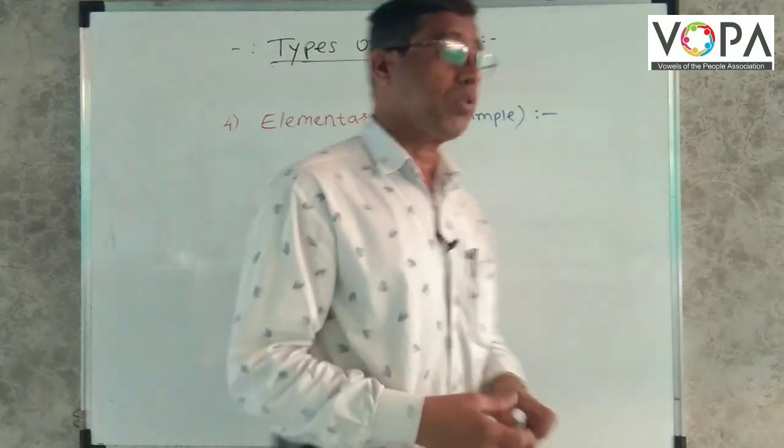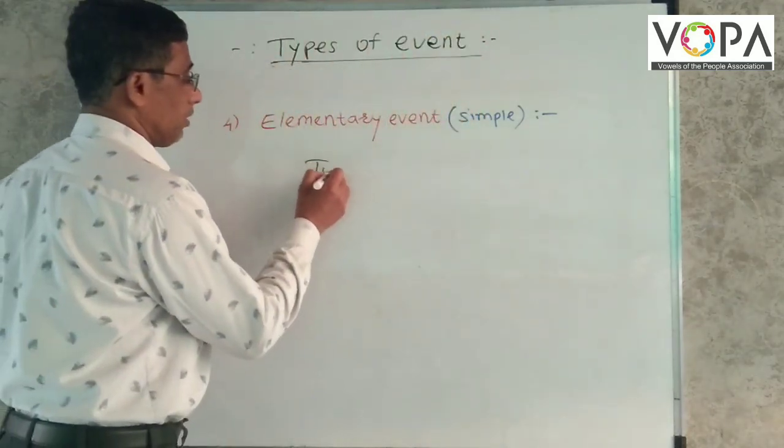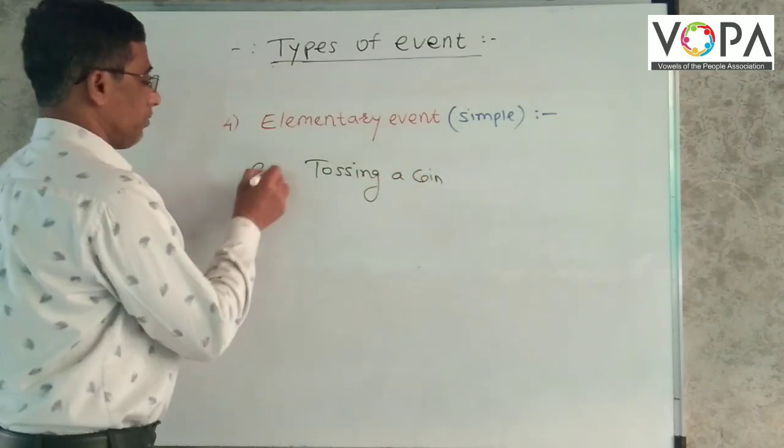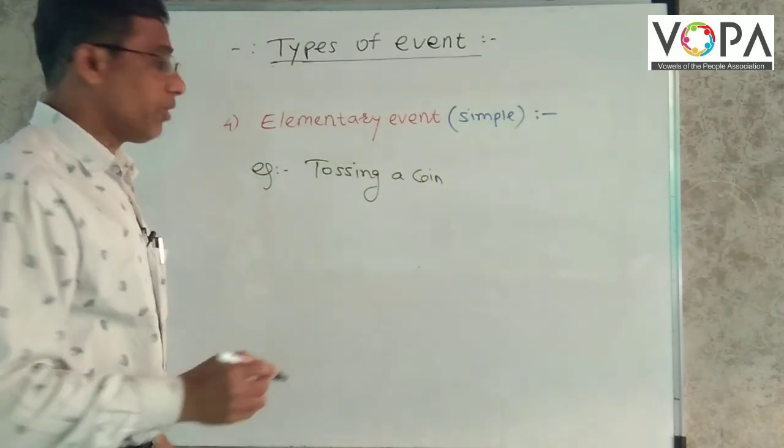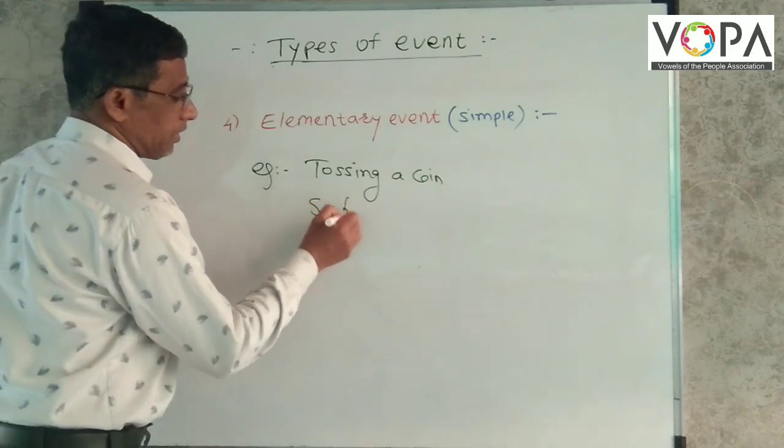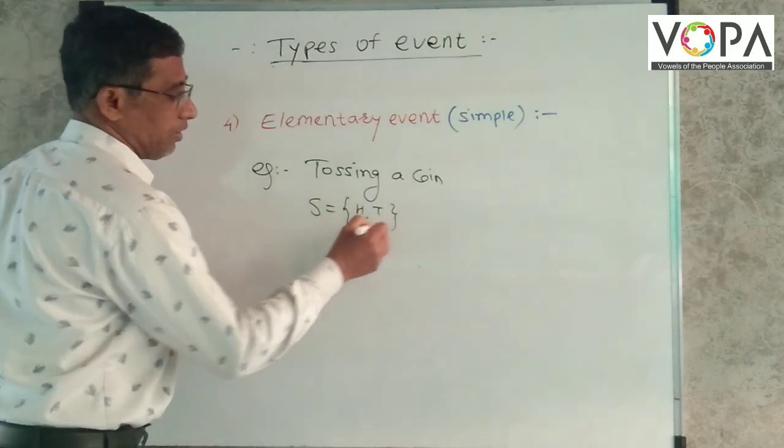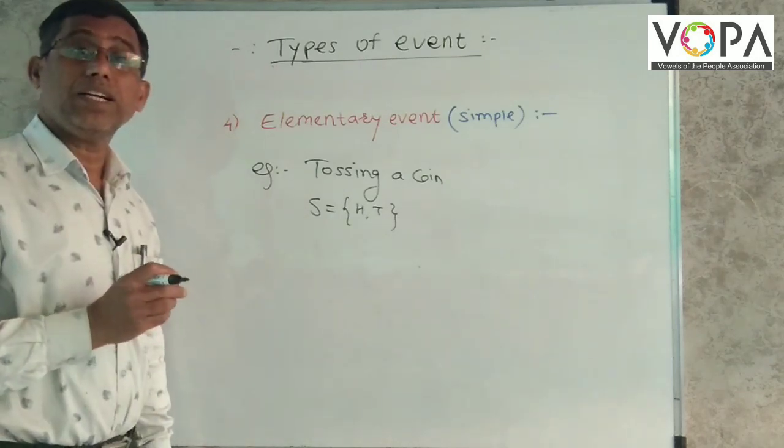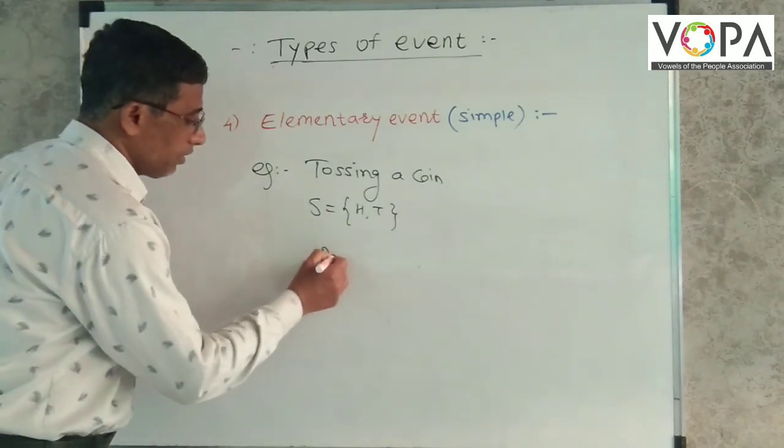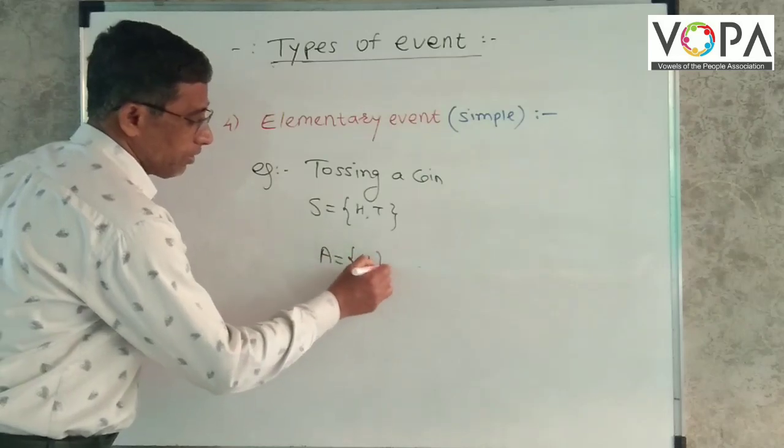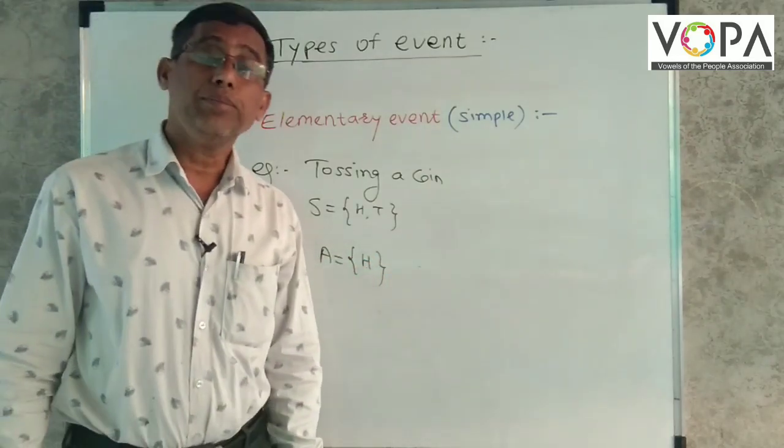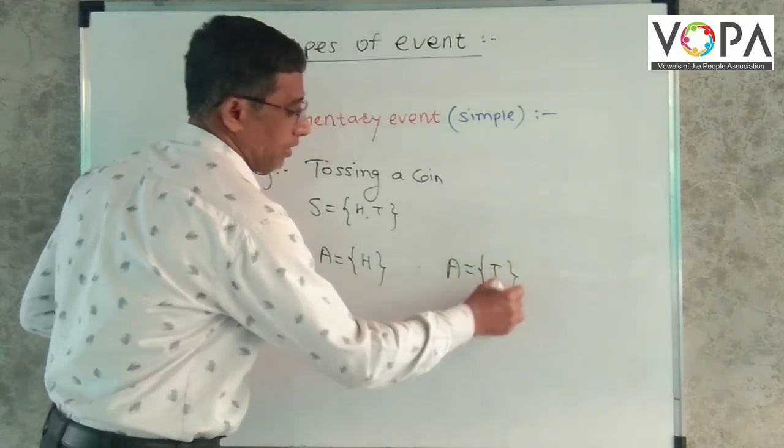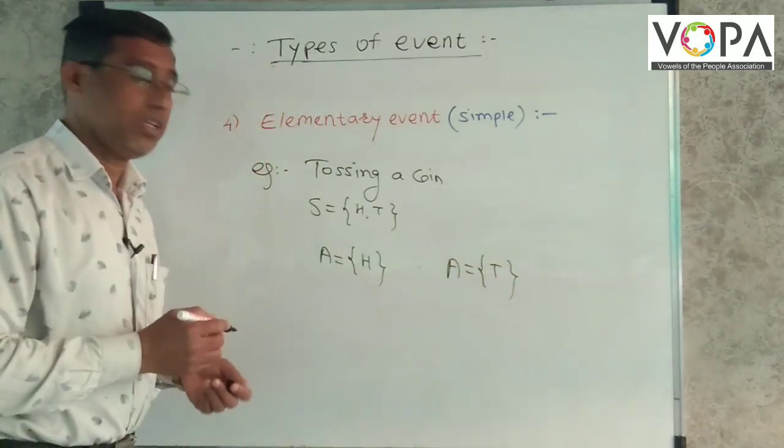For an example, suppose tossing a coin, what we get? Head or tail. Suppose A be an event of getting head then A is equal to H, or A be an event of getting tail, then this is an elementary event.